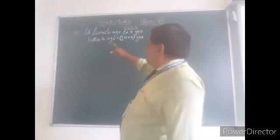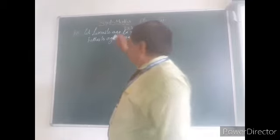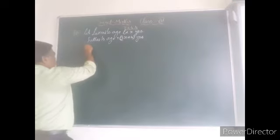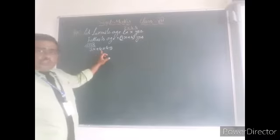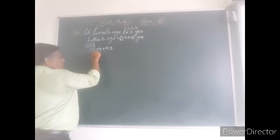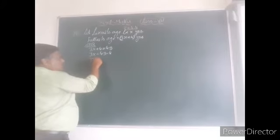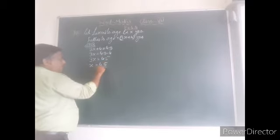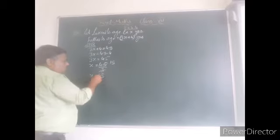Since he is 49 years old and his age is this, that is 3X plus 4 equal to — sorry — 3X plus 4 equal to 49. According to the question, 3X plus 4 equal to 49. Transpose this 4, so 3X equal to 49 minus 4. 3X is equal to 45. X is equal to 45 divided by 3. 3X is equal to 50.